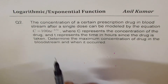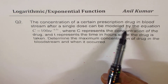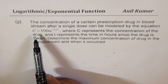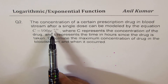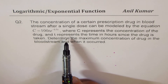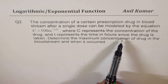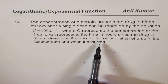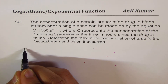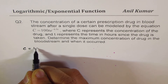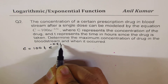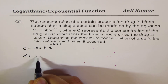Question number two: the concentration of a certain prescription drug in the bloodstream after a single dose can be modeled by the equation C = 100t·e^(−0.5t), where C represents the concentration of the drug and T represents time in hours since the drug is taken. Determine the maximum concentration of the drug in the bloodstream and when it occurs. We are given C = 100t·e^(−0.5t).